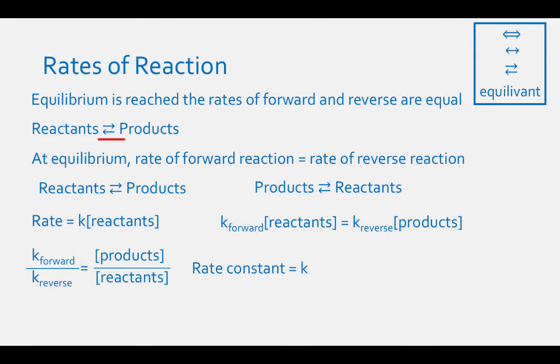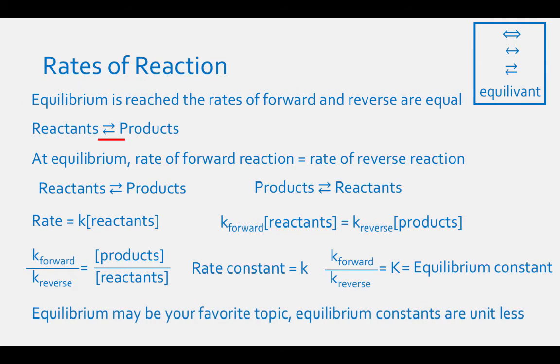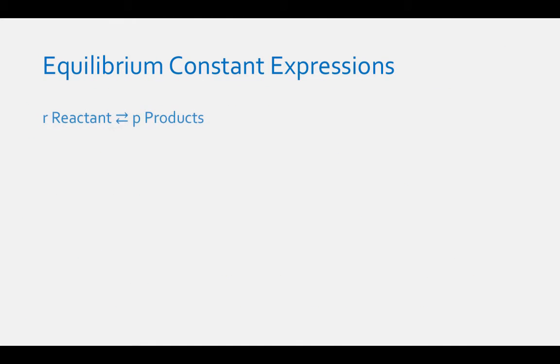The rate constant is represented by a lowercase k, but the ratio of the forward rate constant to the reverse rate constant is represented by a capital K. Capital K is given the special name of equilibrium constant. For a generic equation where coefficient r and a reactant is in equilibrium with coefficient p and a product, the equilibrium constant expression equals the concentration of the products raised to their coefficient p, divided by the concentration of the reactants raised to their coefficient r.